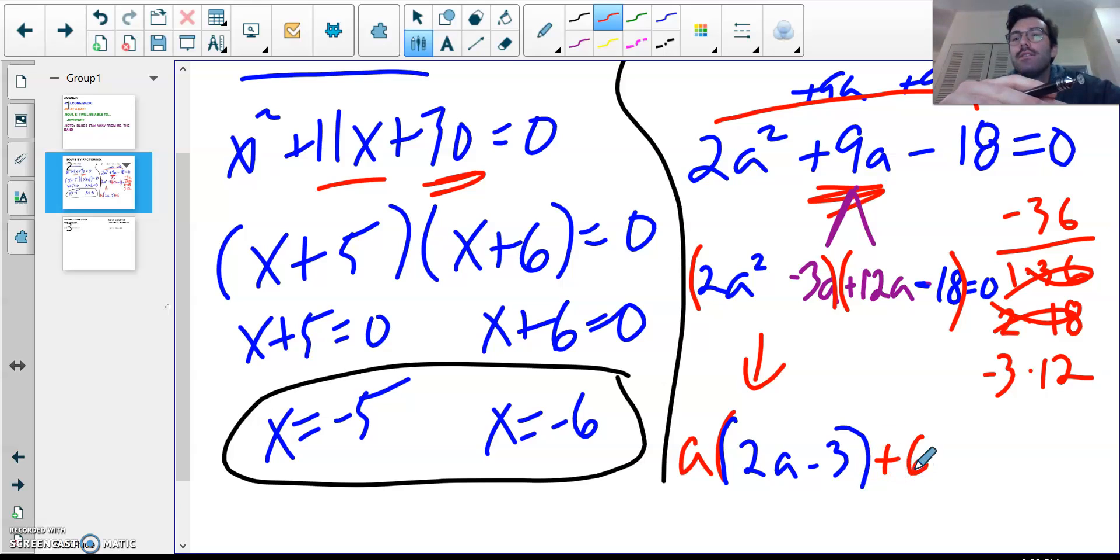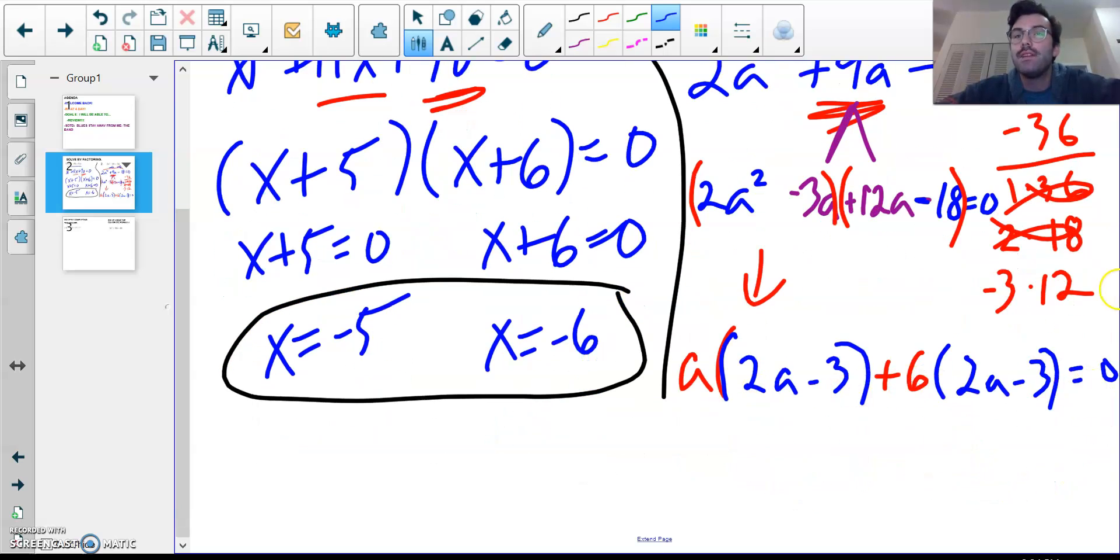GCF between 12a and 18. Hmm. Greatest common factor, I think, is positive 6. What do you think? Do you think so, too? Oh. Oh. I'll drop the stylus. Do you think so, too? Okay, good. I can't lose this because if I break it, I'm done for. I have to use my finger and nothing will make sense. So, I take the 6 out. I get 2a minus 3 again. And that equals 0 comes down for the ride. Now, look. Our two parentheses match. That's a good thing.